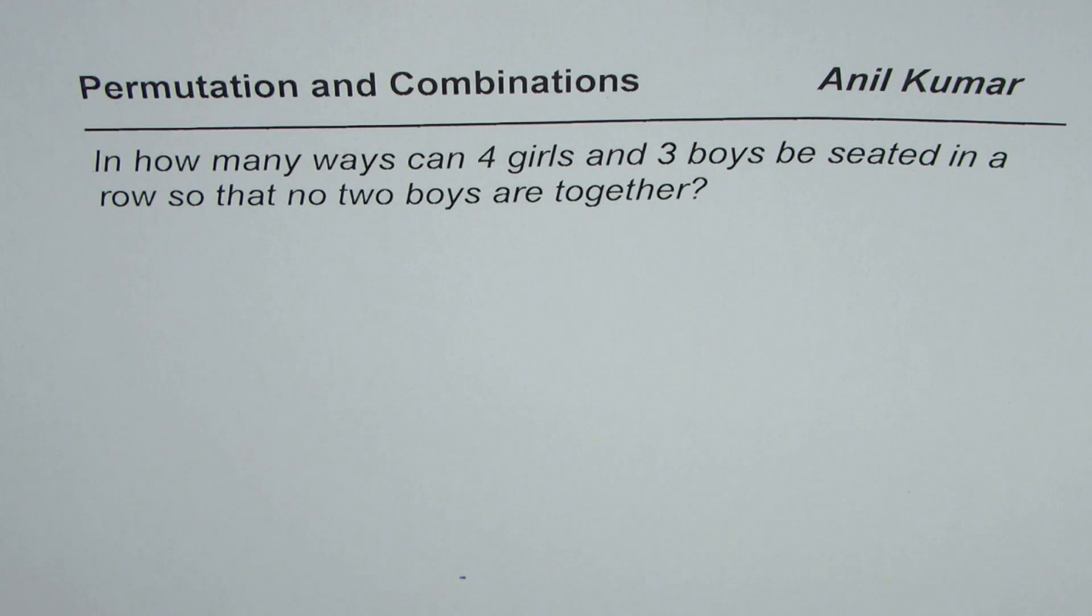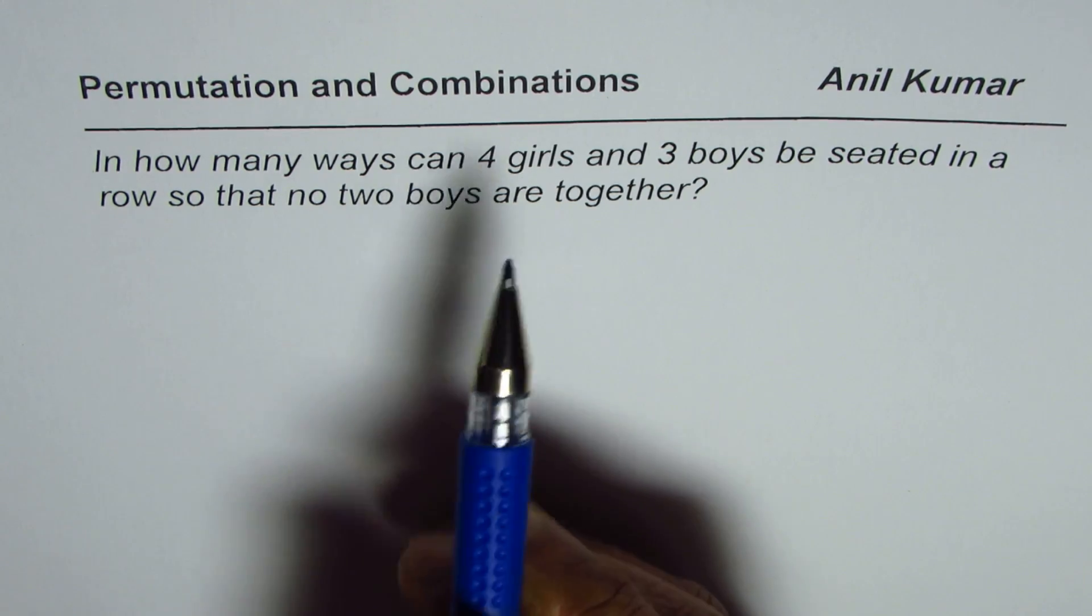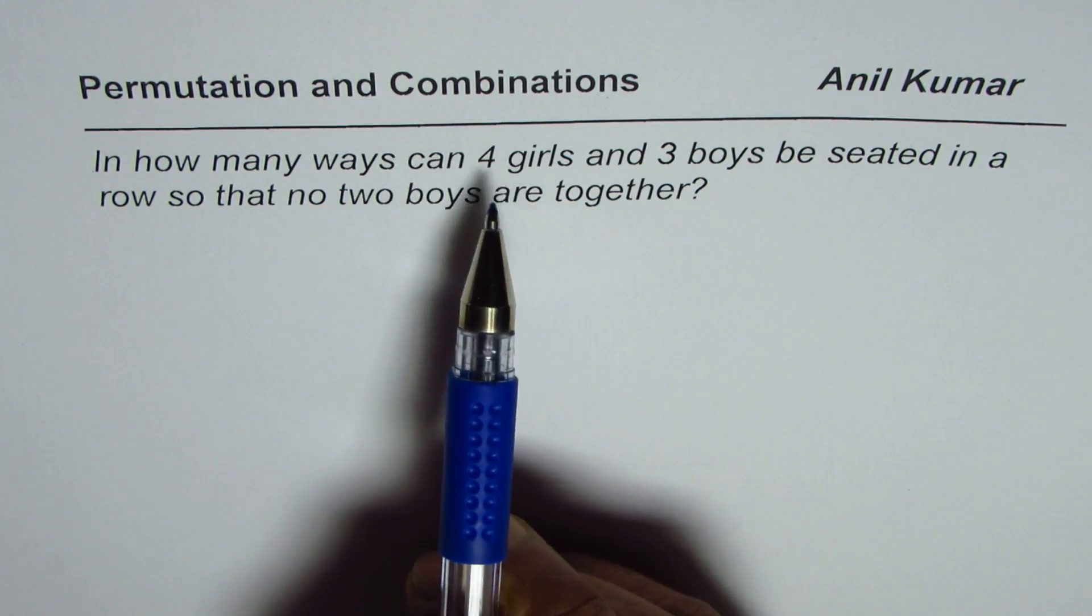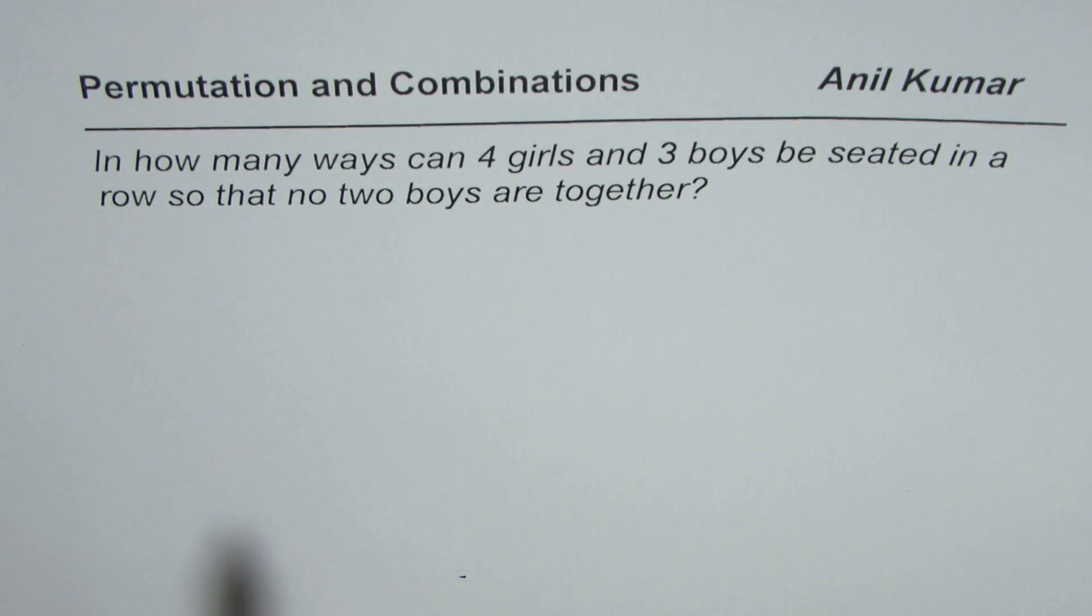You can pause the video, answer the question and then look into my suggestion. Now, in this question, we need to arrange four girls and three boys so that no two boys are together. The way we can do it is like this.